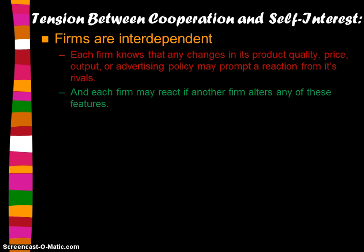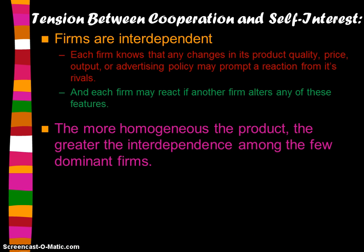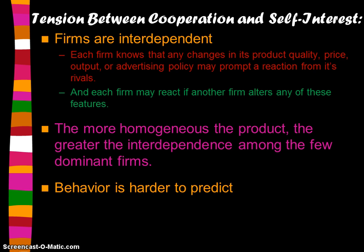Each firm may react if another firm alters any of these features. The more homogenous or similar the product, the greater the interdependence among the few dominant firms — the more they have to pay attention to what each other is doing. Behavior is harder to predict in oligopoly markets than in the other market structures we've studied, especially in the long run.